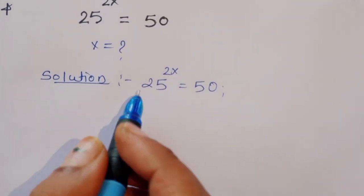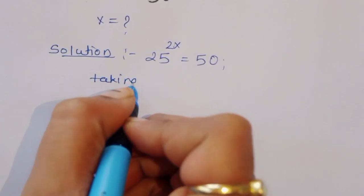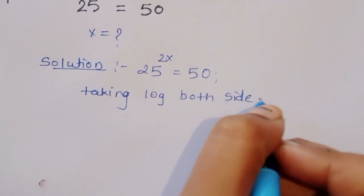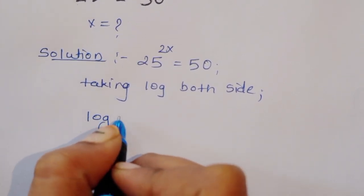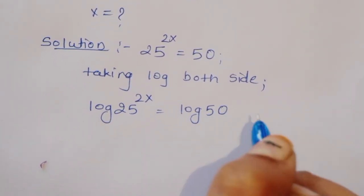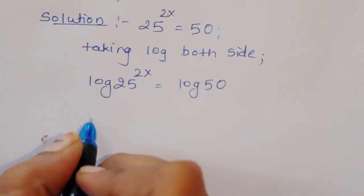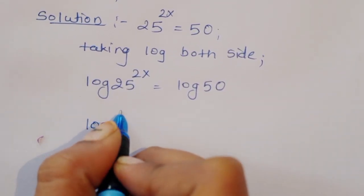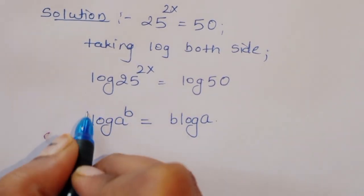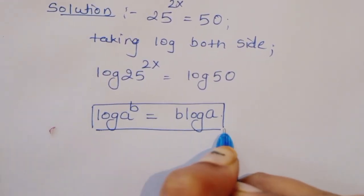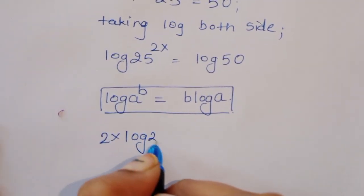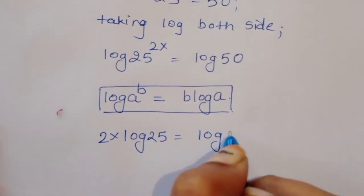Now we can take log of both sides. So taking log of both sides we will get log of 25 raised to 2x is equal to log of 50. We know the formula: log of a raised to b is equal to b times log of a. By using this formula we can write 2x log of 25 is equal to log of 50.